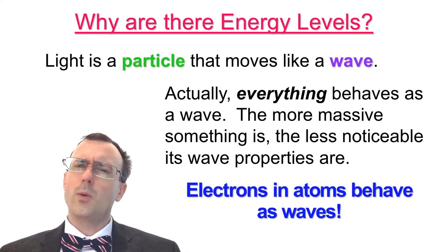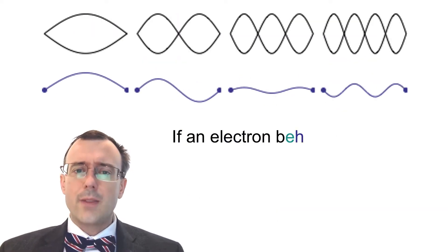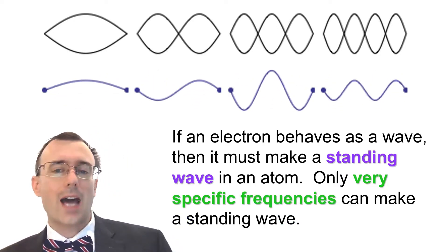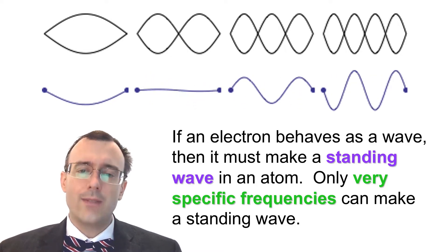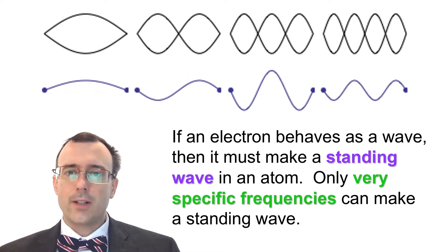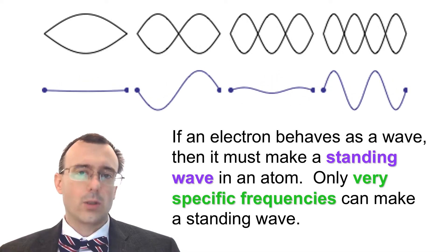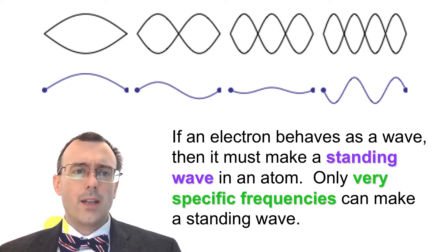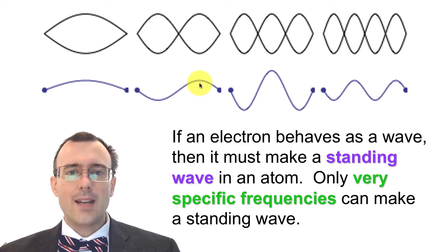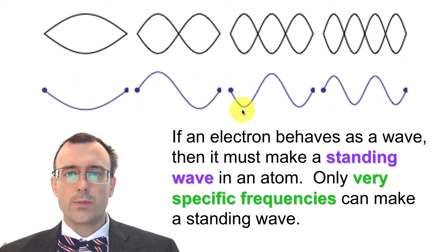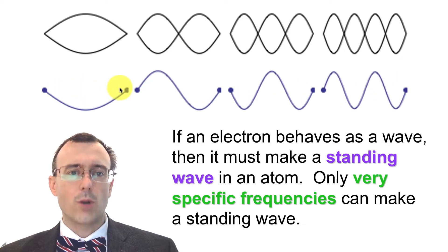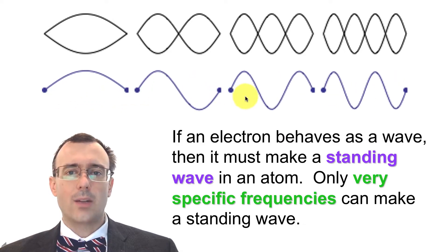Electrons in atoms behave as waves — but what does that even mean? It means that if an electron behaves as a wave, it must make a standing wave in an atom. It can't just leave the atom and go back and forth; it has to make a standing wave within the atom. Here are a few different simple standing waves. This is not what the standing waves will look like in the atom — we'll talk about that specifically next unit — but these are some examples.